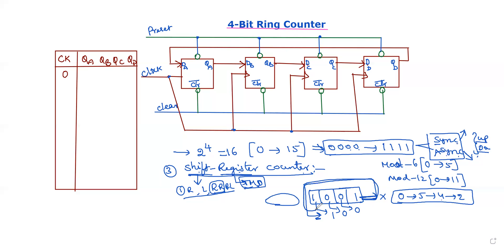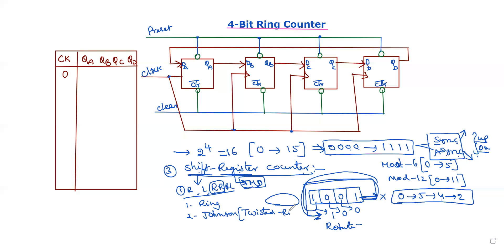In a ring counter, we connect the output back with a ring — this is called rotate right shifting operation. Based on the shape of the connection, we define it as a 4-bit ring counter. There are two types of shift register counters: the first is the ring counter, and the second is called the Johnson counter, also known as the twisted ring counter.